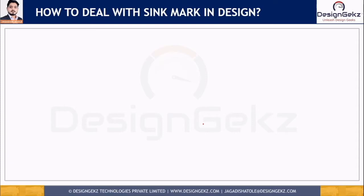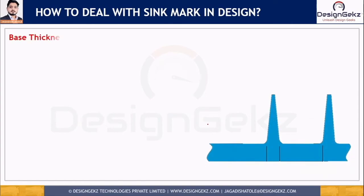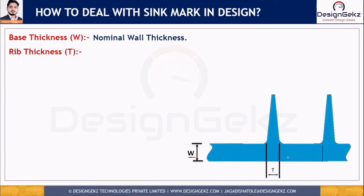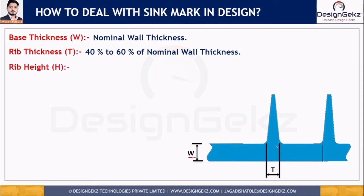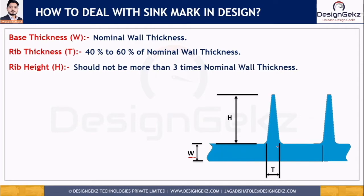How can we deal with sink marks using design parameters for a rib specifically? Taking the nominal wall thickness as 'w', the rib base thickness should be 40 to 60 percent of the nominal wall thickness — a thinner rib does not provide sufficient stiffness and may be hard to fill, while a thicker rib can introduce sink marks. The rib height should not be more than three times the nominal wall thickness, as taller ribs can increase strength but are difficult to mold and may be hard to fill.